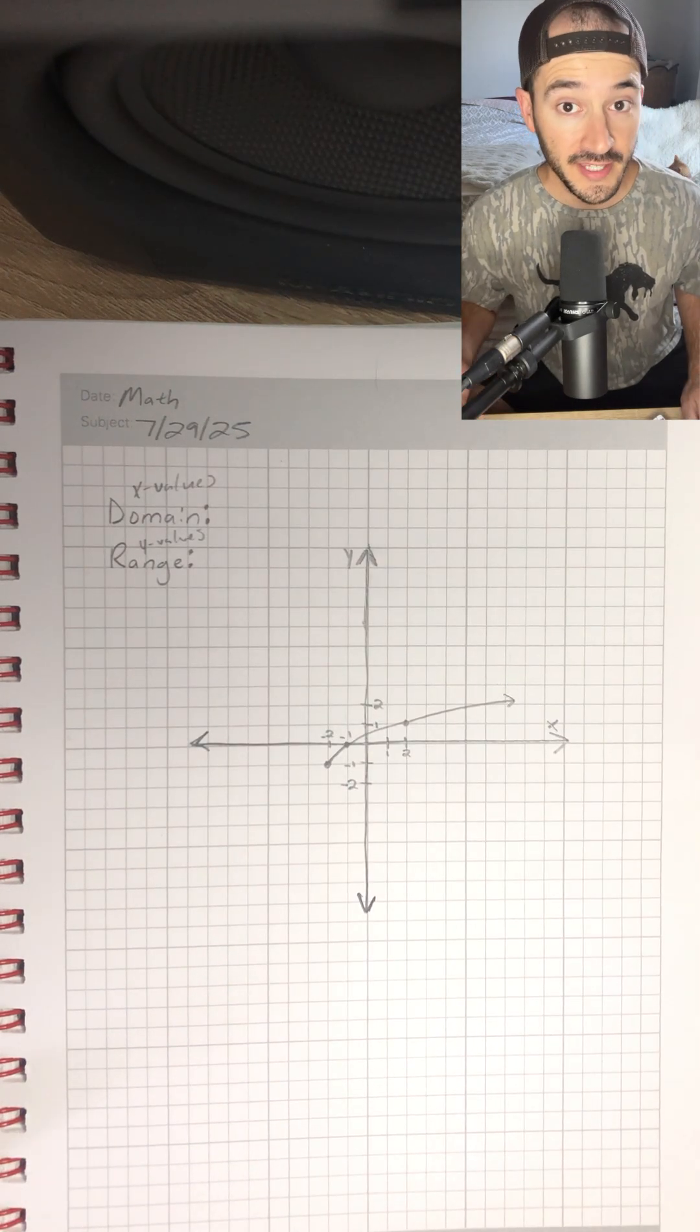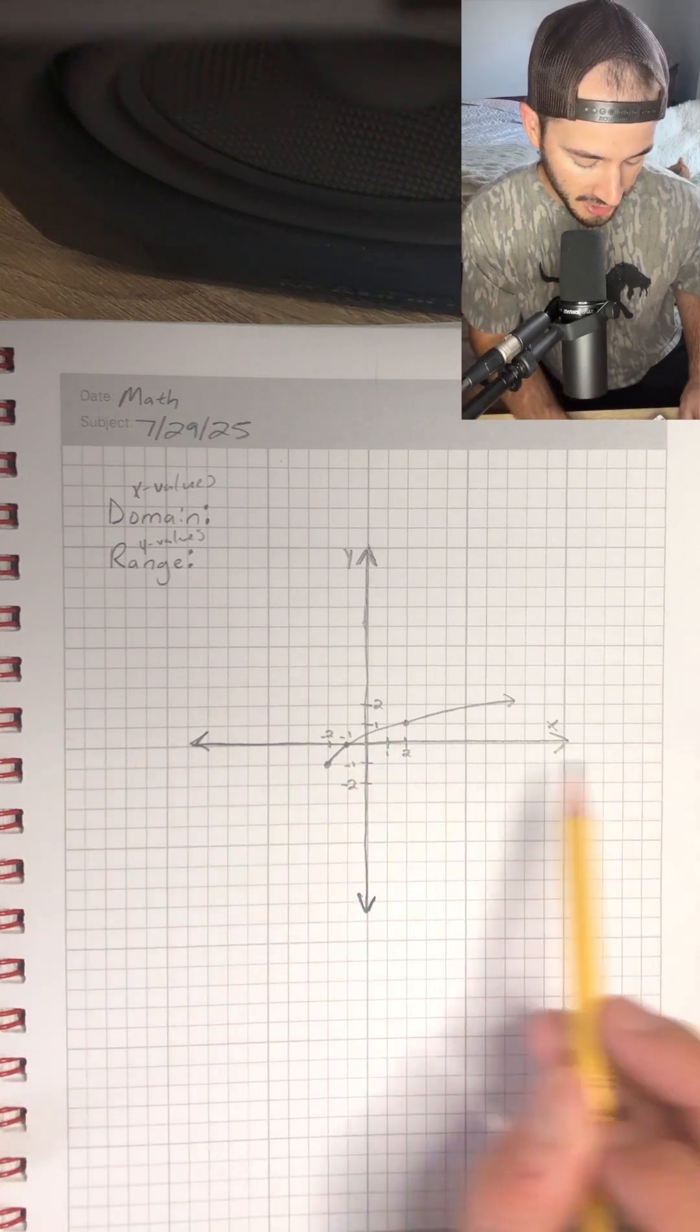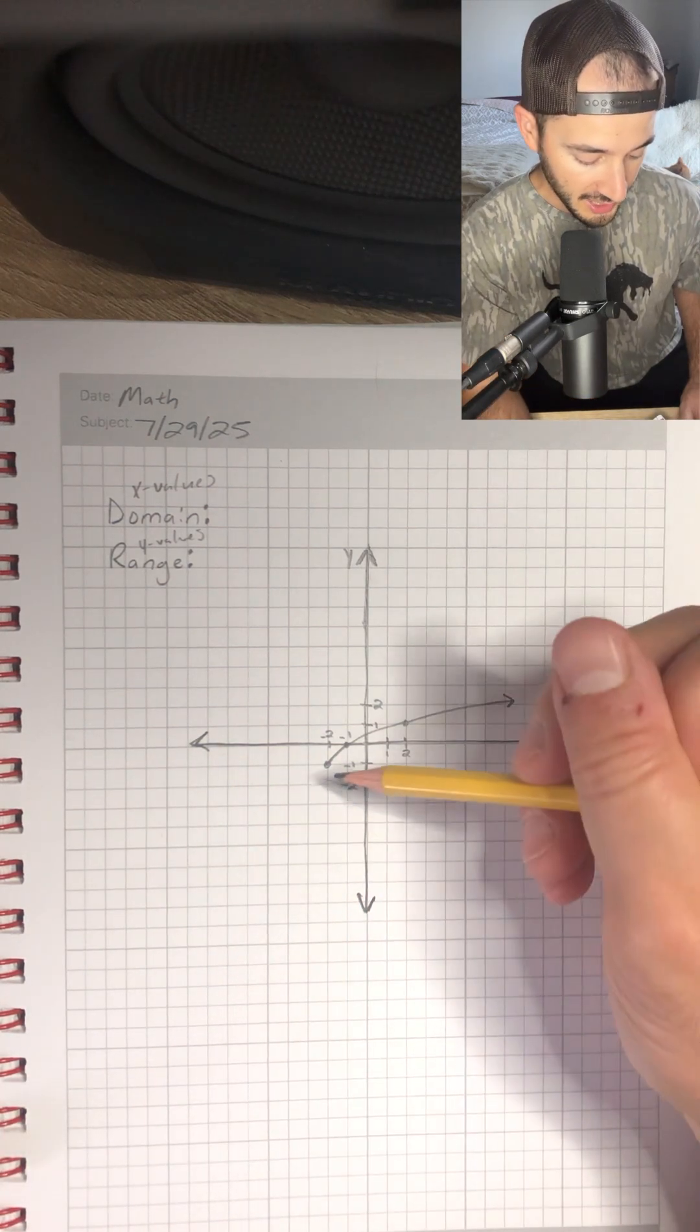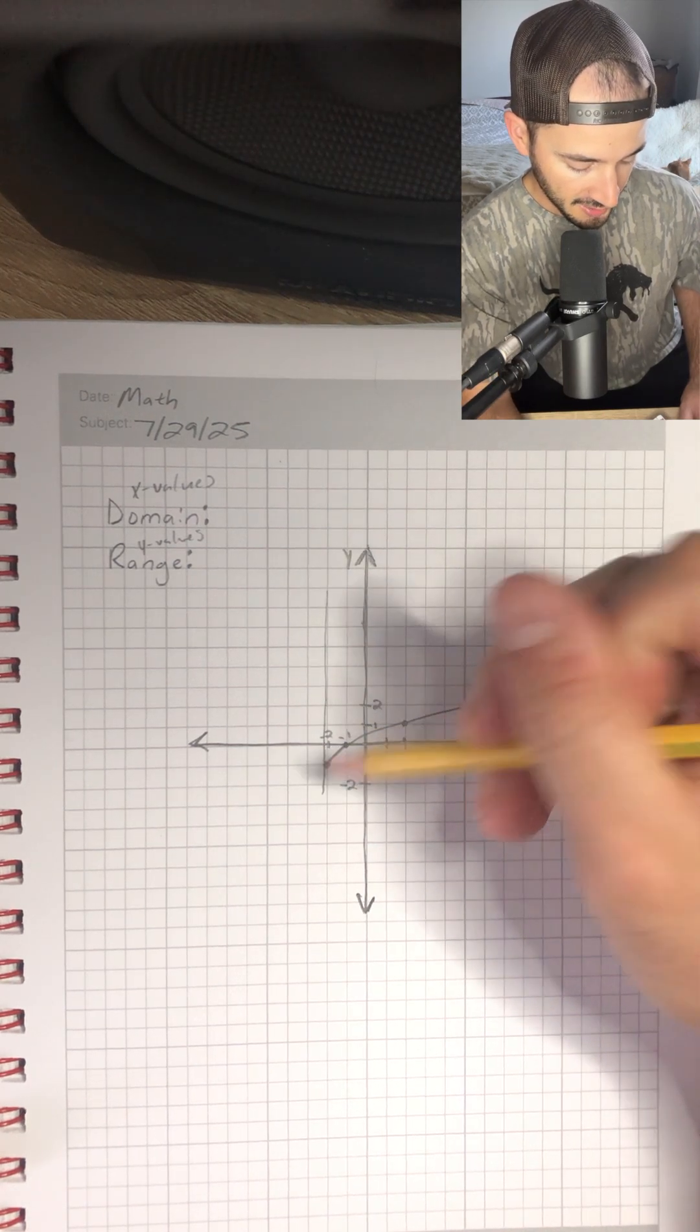So domain, we're talking about the x values. On a graph, we're going to look from left to right. What's the farthest left point that we have on our graph? Well, it'd be even with this line right here.